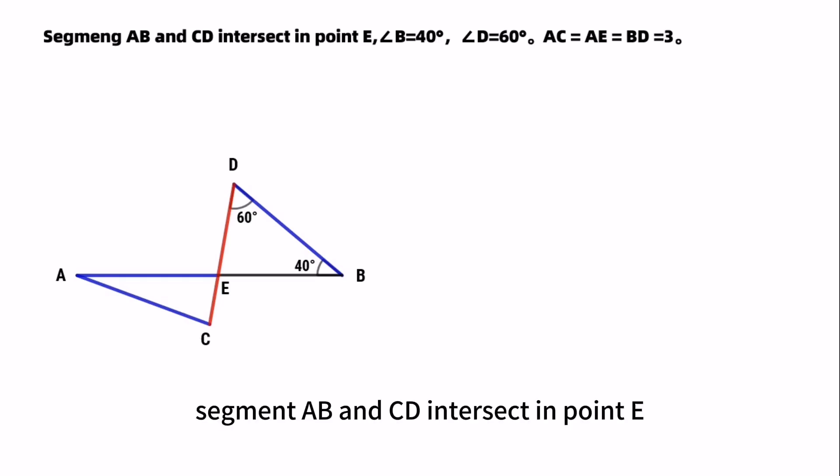Segment AB and CD intersect in point E. Angle B is 40 degrees, angle D is 60 degrees. We know AC equals AE equals BD is 3 units. So what's the value of CD?